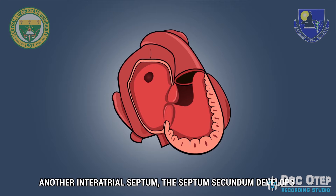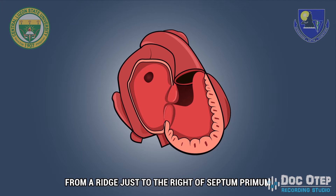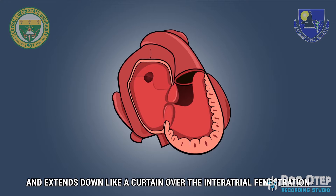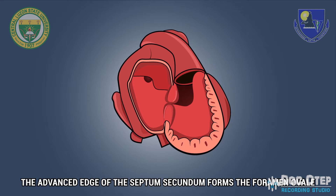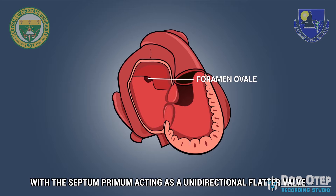Another interatrial septum, the septum secundum, develops from the ridge just to the right of the septum primum and extends down like a curtain over the interatrial fenestration.